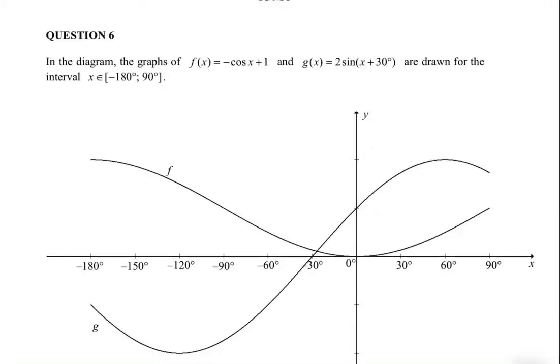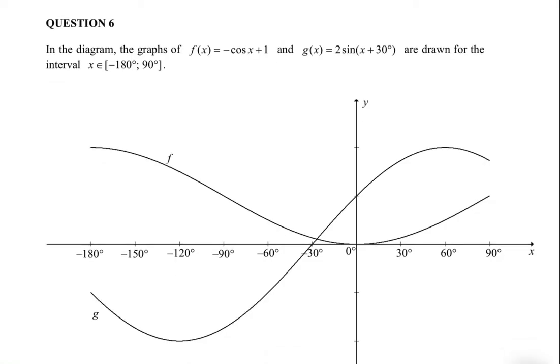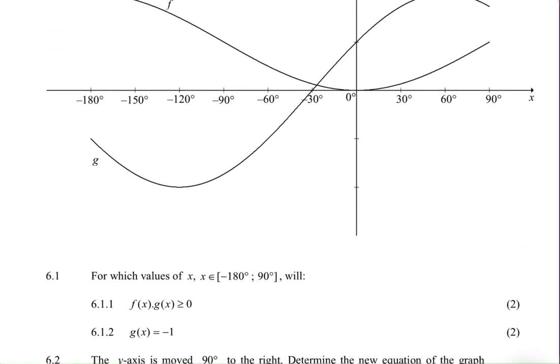In that diagram, the graphs of f(x) and g(x) are drawn for the interval x ∈ [-180°, 90°]. Question 6.1 asks: for which values of x, x being an element of the given interval, will f(x) multiplied by g(x) be greater than or equal to zero?